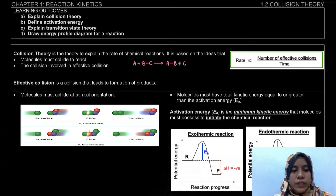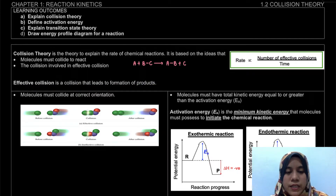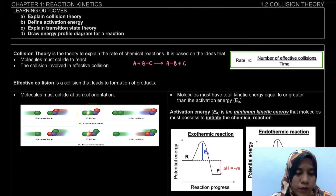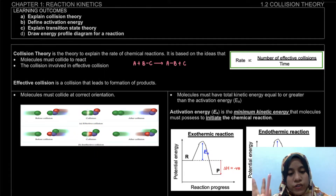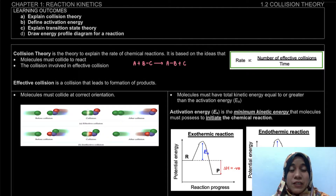When we talk about effective collision, effective collision is a collision that leads to the formation of a product. The first requirement for effective collision is that the molecule must collide at the correct orientation. For example, here we have our reactants on the left-hand side. When it undergoes effective collision, it will form a new product. But if it is not an effective collision, the reactants do not collide at the correct orientation, so the product is the same as the reactant — meaning the reaction does not proceed.